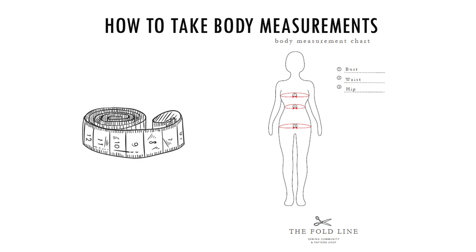You should take your measurements wearing the undergarments that you plan to wear with your final piece. You'll want to take your measurements again each time you make a garment as these can fluctuate. Hold the measuring tape snugly but not too tightly — take a deep breath in and then out and relax. You should be able to fit a finger or two under the tape. To measure your bust, measure across the widest part of your bust, keeping the measuring tape level with the ground. To measure your waist, measure just below the rib cage, usually at the narrowest part of your torso. To measure your hip, you want to measure the widest part of your hip — on most people this is lower on the hip, around the widest part of your butt and hips.